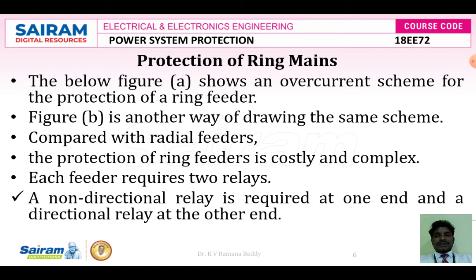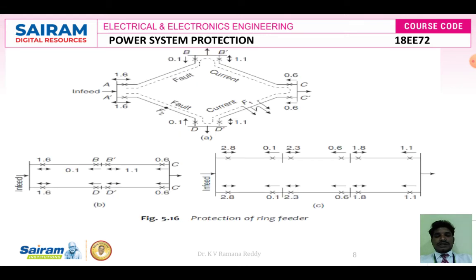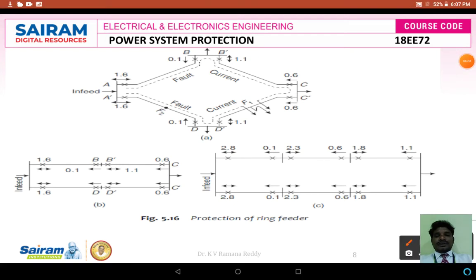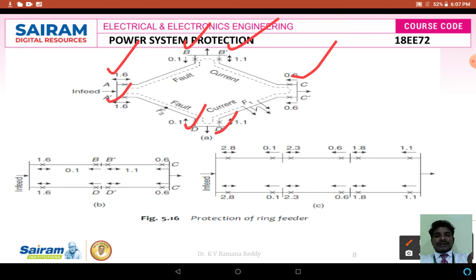Next, protection of ring mains. The below figure shows an overcurrent scheme for the protection of a ring feeder. In this figure, relays A and A' are non-directional relays. B is a directional relay and B' is a non-directional relay. D is a directional relay and D' is a non-directional relay. C is a directional relay and C' is also a directional relay.